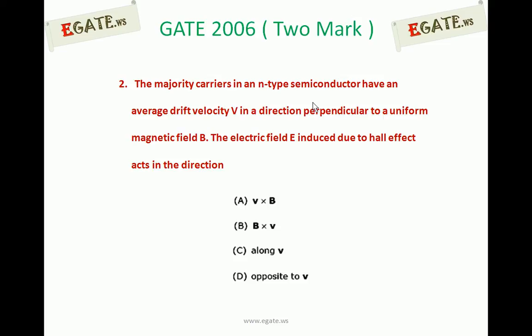The majority carriers in an n-type semiconductor have an average drift velocity V in a direction perpendicular to a uniform magnetic field B. The electric field E induced due to the Hall effect acts in the direction: A) V cross B, B) B cross V, C) along V, D) opposite to V.